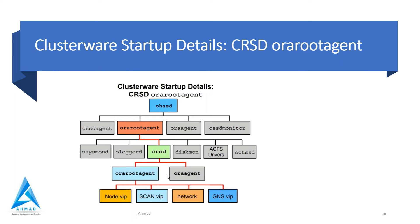Each node VIP is assigned an unused IP address - this is usually done via DHCP, but you can manually assign it. There is initially one node VIP per cluster node at clusterware startup. When a cluster node becomes unreachable, the node VIP is failed over to a surviving node to redirect connection requests made to the unreachable node.